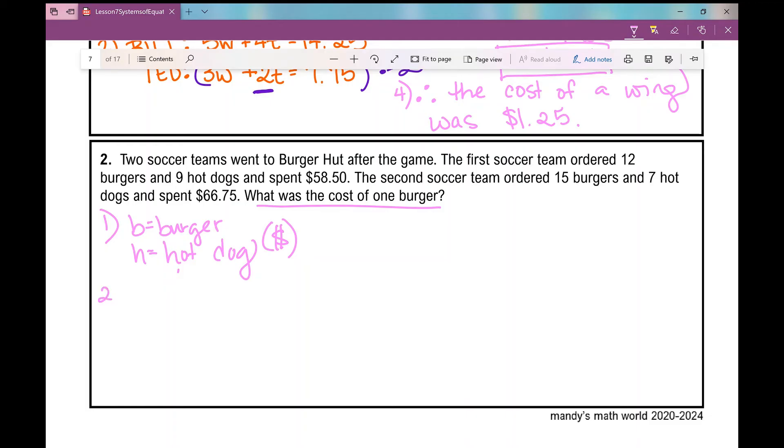So now let's set up our two equations. We've got two different scenarios here. We've got the first soccer team and their situation and the second soccer team and their situation. The first soccer team ordered 12 burgers and 9 hot dogs - 12 times the amount for a burger plus 9 times the amount of a hot dog and they spent $58.50. The second soccer team ordered 15 burgers, 15 times the amount of a burger, 7 hot dogs and they spent $66.75.